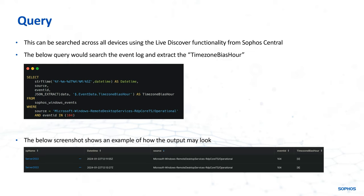On the left we have the endpoint name — so where did this RDP connection occur on? What date and time did that occur? Which is really useful in looking at some of the other RDP logs we've previously discussed to find out the user that logged in around this time and would have generated this event. The source is just where we found this event ID, which is 104 in that column.